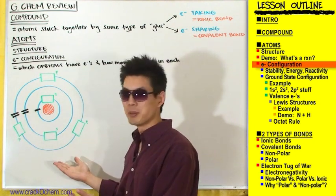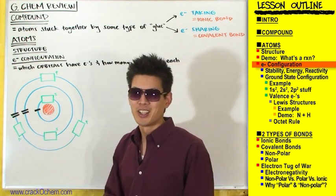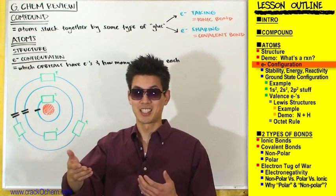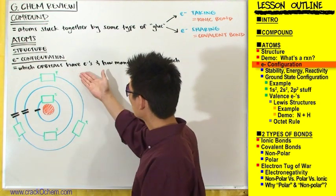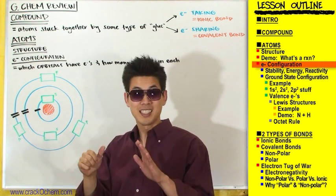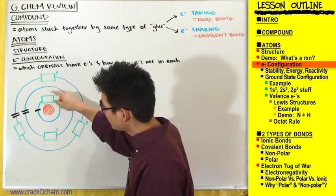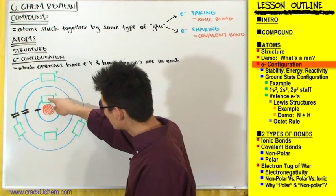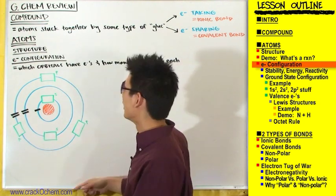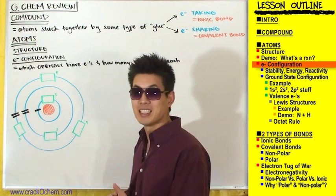Depending on what atom you're talking about, the diagram looks different because each atom has a different number of electrons. For carbon — atom number six — it has six electrons. There are many ways to arrange those six electrons: maybe all six in one orbital, or two in one and four in another, or two here, two here, one here, one here. There are many possible configurations.